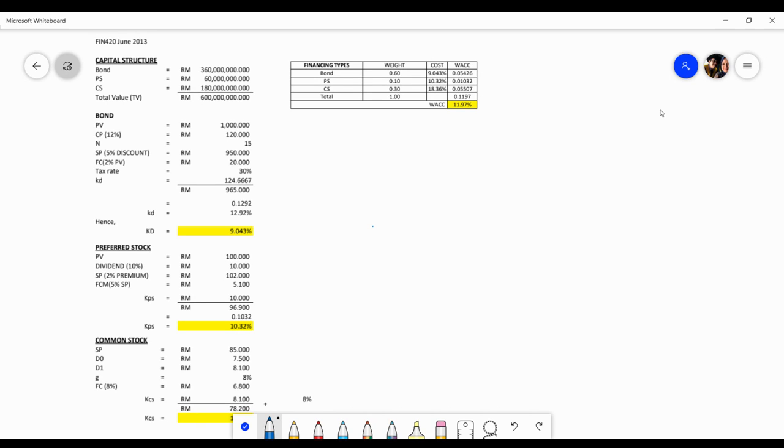For this situation, for example, if the company needs capital, the amount of capital that the company needs is 600 million ringgit. Based on this, the company will get the capital amount 360 million ringgit from bond, 60 million ringgit from preferred stock, and the balance 180 million ringgit from common stock.